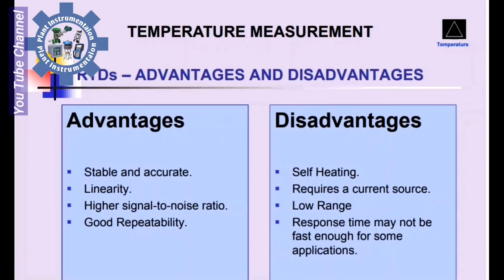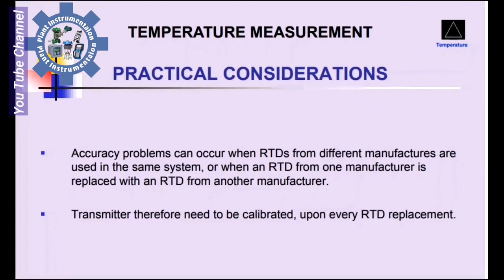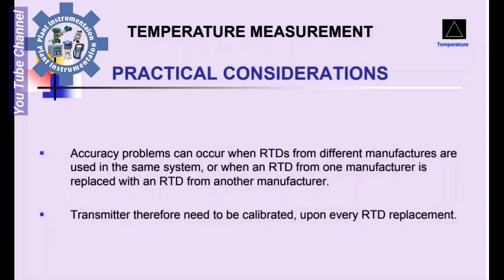RTDs: Advantages and Disadvantages. Advantages: stable and accurate, linearity, higher signal-to-noise ratio, good repeatability. Disadvantages: self-heating, requires a current source, low range response time may not be fast enough for some applications. Accuracy problems can occur when RTDs from different manufacturers are used in the same system, or when an RTD from one manufacturer is replaced with an RTD from another manufacturer. The transmitter therefore needs to be calibrated upon every replacement.